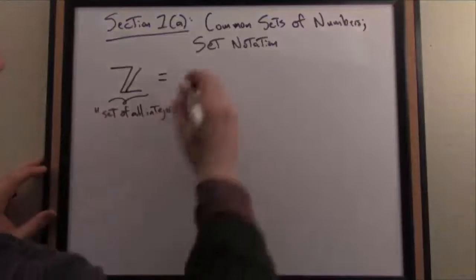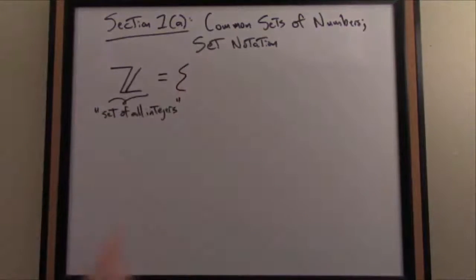I'm going to write another description of that set, the set of all integers, in what's called set notation. For set notation, you start with a curly brace on the left, and then at the end of this definition I have a right curly brace, and in between I'm going to fill in all the elements of that set separated by commas.